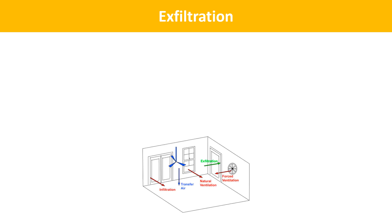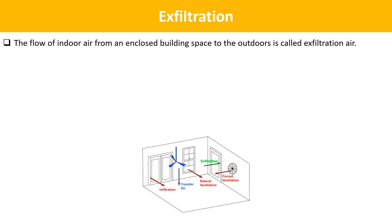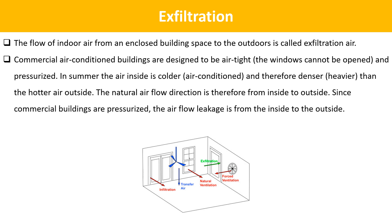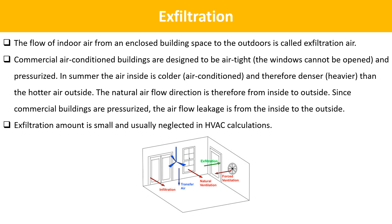The next term is Exfiltration. The flow of indoor air from an enclosed building space to the outdoors is called exfiltration air. Commercial air-conditioned buildings are designed to be airtight — the windows cannot be opened — and pressurized. In summer, the air inside is colder, air-conditioned, and therefore denser and heavier than the hotter air outside, so the natural airflow direction is from inside to outside. Since commercial buildings are pressurized, air leakage is from the inside to the outside. Exfiltration amount is small and usually neglected in HVAC calculations.